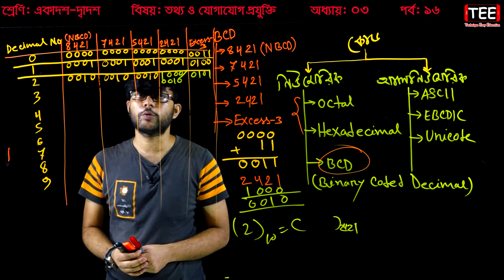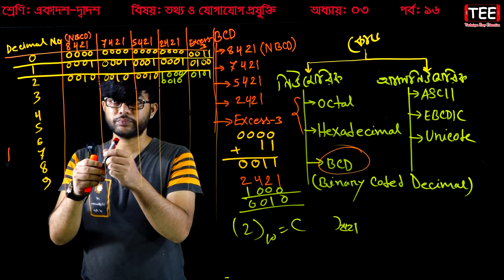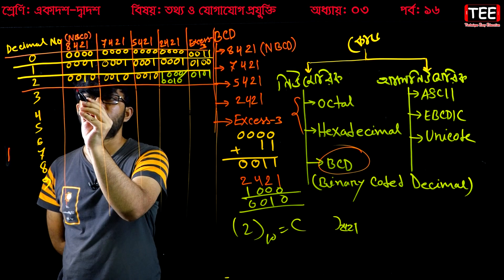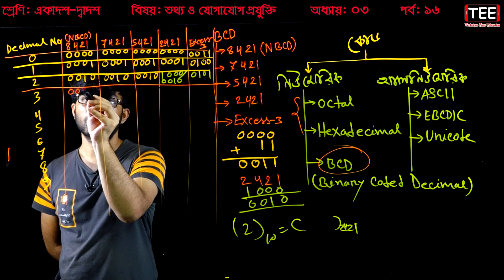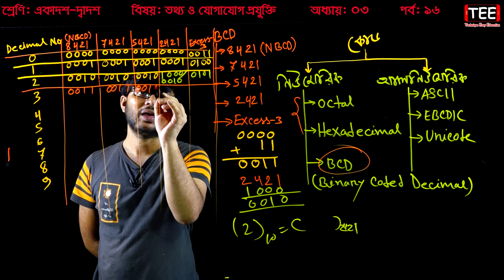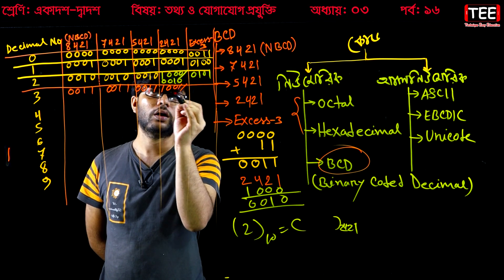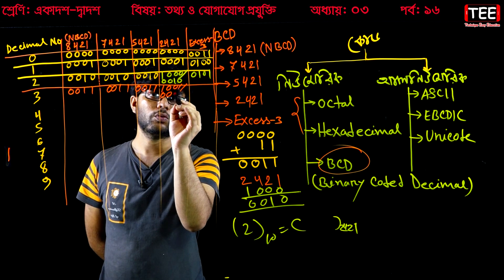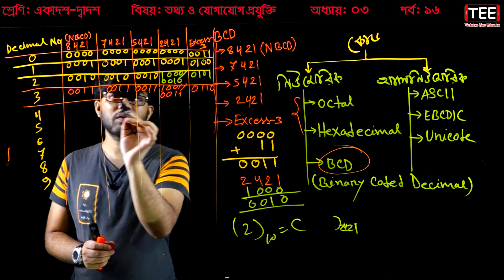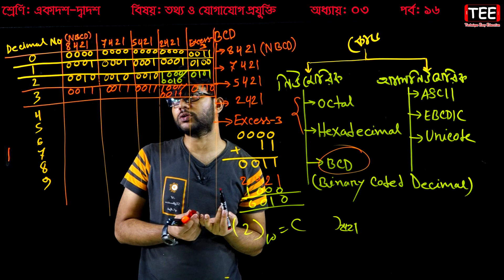If we continue, we keep doing the representation. As I said, XS3 adds 3 to each digit: 0+3=3 represented as 0011, 1+3=4 represented as 0100, 2+3=5 represented as 0101, and so on.